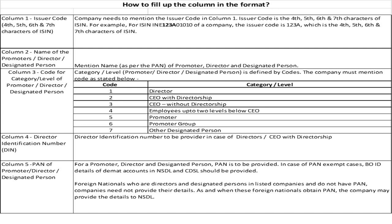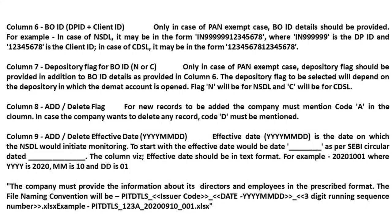Column 5 - PAN of the Promoter, Director, and Designated Person. For a Promoter, Director, or Designated Person, PAN is to be provided. In case of PAN exempt cases, BOID details of the DMAT account in NSDL and CDSL should be provided. Foreign national Directors or Designated Persons in listed companies who do not have PAN — companies need not provide their details until these foreign nationals obtain PAN, after which the company may provide their details to NSDL.